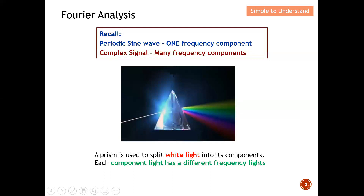Let's do a very quick recall based on the previous video. I mentioned that for a periodic sine wave, it basically consists of only one frequency component. We get this frequency component based on the period of the sine wave — one over the period gives us the frequency. For a sine wave we can only have one frequency component. For a complex signal, they consist of many frequency components — as long as there is more than one frequency component, we call it a complex signal.